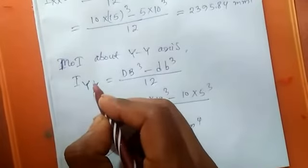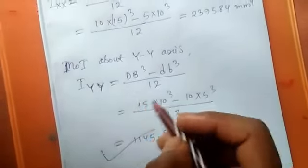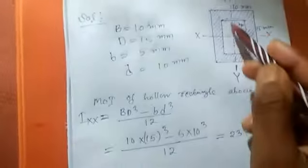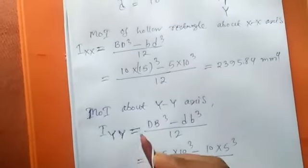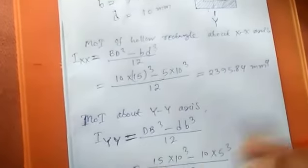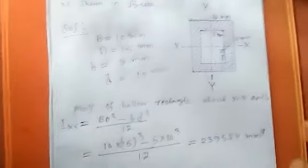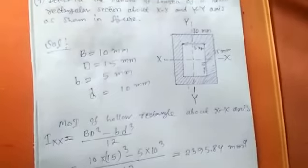That is I_yy, moment of inertia of this hollow rectangle about Y-Y axis. So in this way we can easily determine the moment of inertia of a hollow rectangle. So friends, like this video and share this video to your friend.